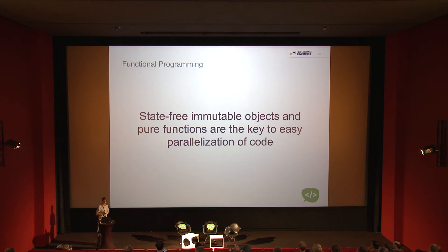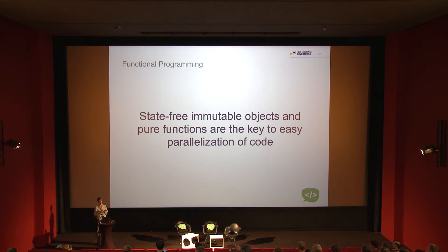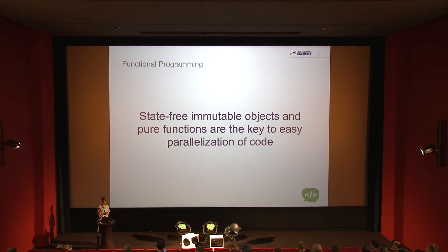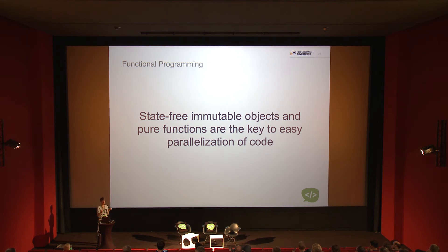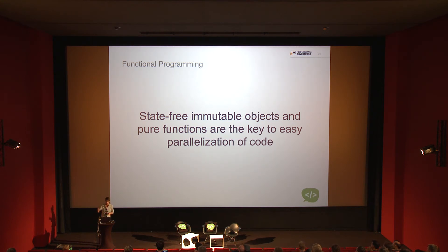Immutable means you cannot change the state of your object — very different from object-oriented programming. In OOP you have a car object and methods like start the car, which changes the internal state to 'car is now running.' In functional programming, you have a car object and a function that takes a car object and returns a new car object where the car is running. The key concept is that you do not manipulate objects — you transform them into new objects, so objects have no hidden state.